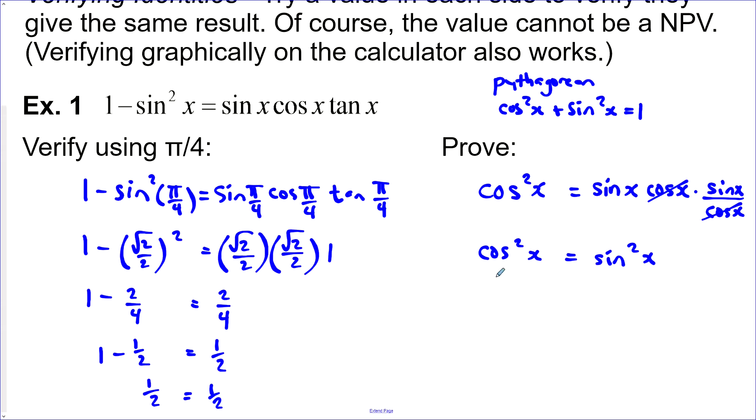And this isn't true. Cosine starts at a maximum, sine starts at a midline going up. This is not an identity. Even though it seemed to verify using π/4, that must have just been a lucky spot where the two sides were equal. This really isn't an identity.